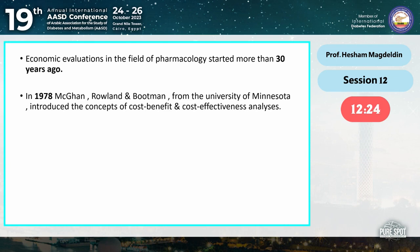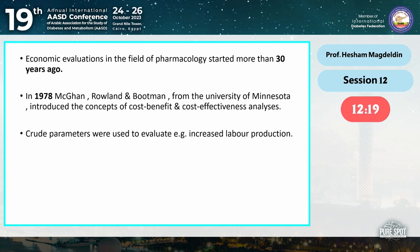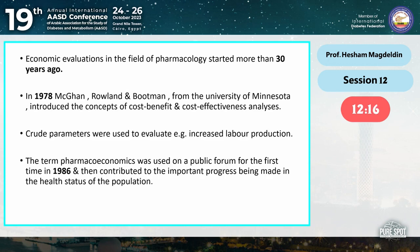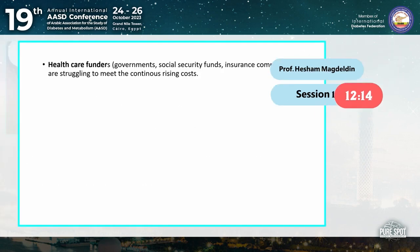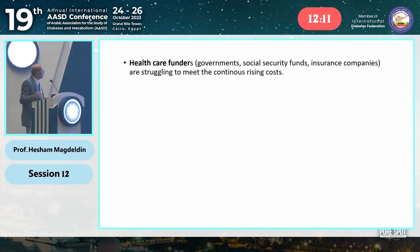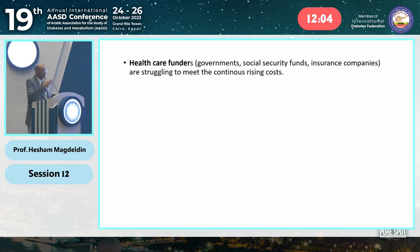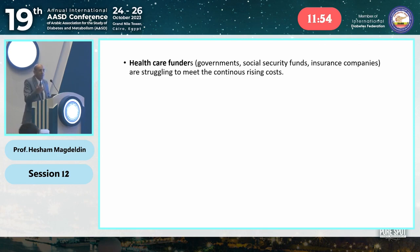The subject is not very recent; it is more than 30 years old, starting in 1978. Then in 1986 they started to use pharmacoeconomics. This rapid progress is very important because healthcare funders — the government — use this when deciding on a new drug for a formulary committee in a hospital or government.